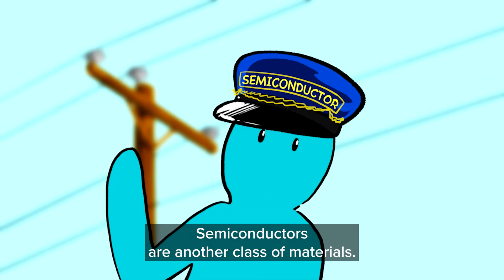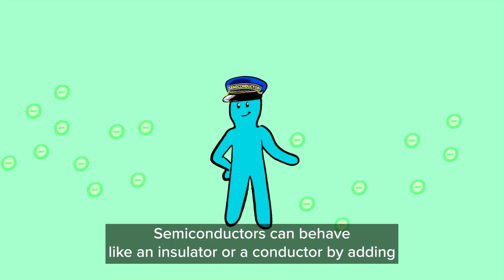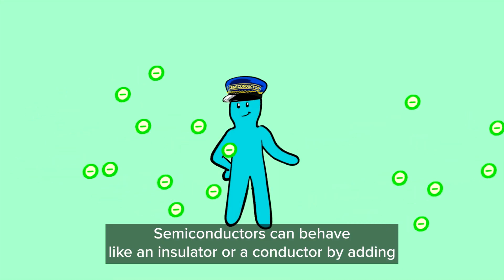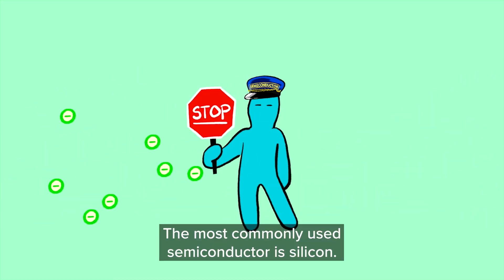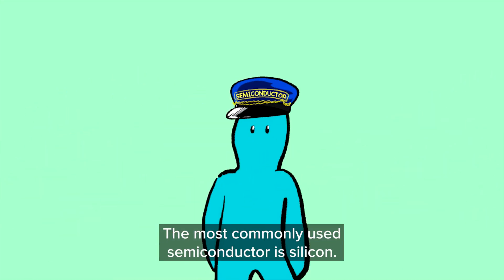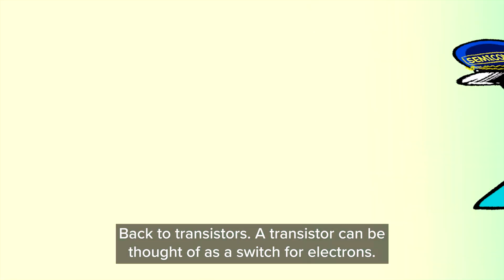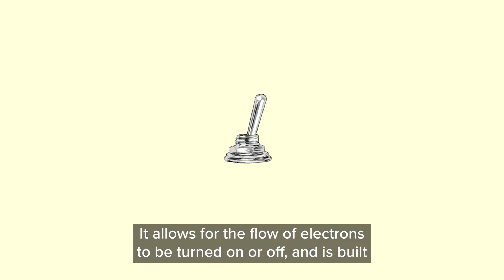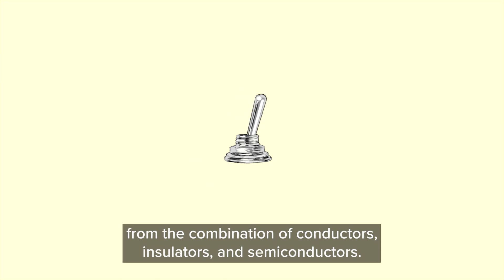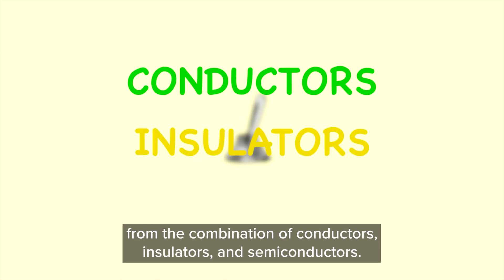Semiconductors are another class of materials. Semiconductors can behave like an insulator or a conductor by adding or removing electrons. The most commonly used semiconductor is silicon. A transistor can be thought of as a switch for electrons. It allows for the flow of electrons to be turned on or off and is built from a combination of conductors, insulators, and semiconductors.